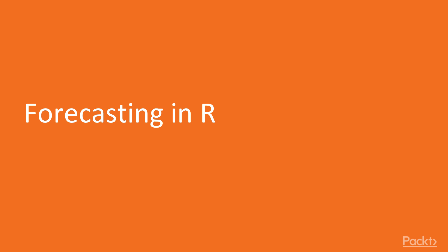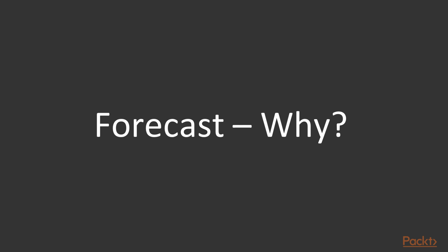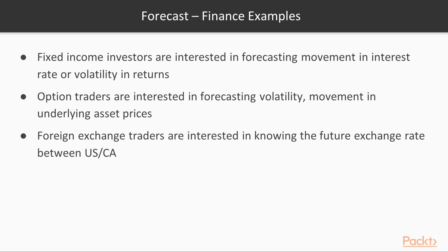Welcome to the video on forecasting. In this video we'll study why we need to forecast, what forecasting is, and the difference between in-sample and out-of-sample forecasting. The main purpose of building any model is to use it to make meaningful and accurate forecasts. For example, the federal government forecasts GDP, traders and portfolio managers forecast portfolio returns, and corporates forecast sales or profitability to keep shareholders happy.